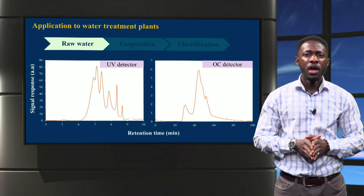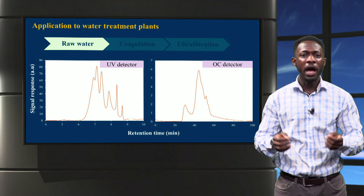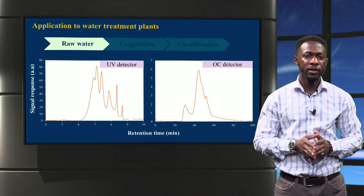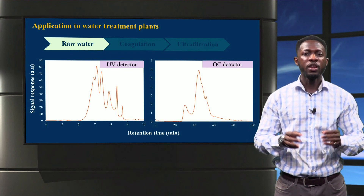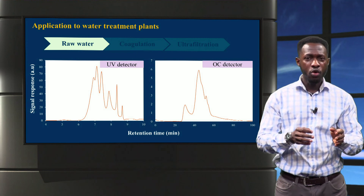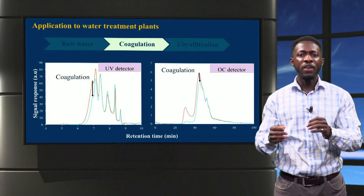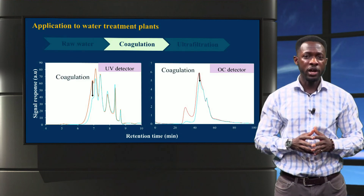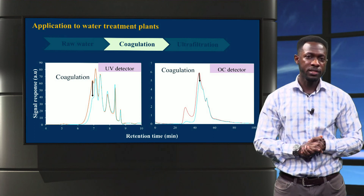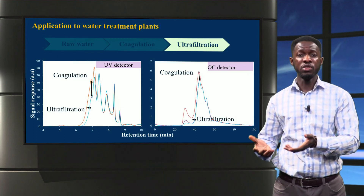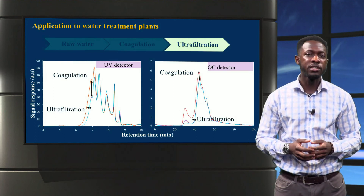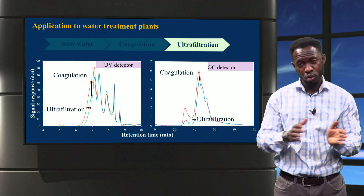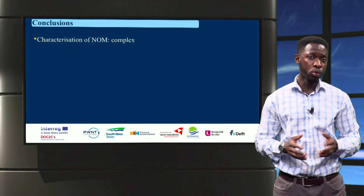Here, we see a chromatogram of a raw water sample identified by both UV and organic carbon detectors. After the first treatment by coagulation, we can observe a substantial decrease in the largest NOM fraction, notably the humic substances. An additional treatment step by ultrafiltration sees very little improvement across all fractions.